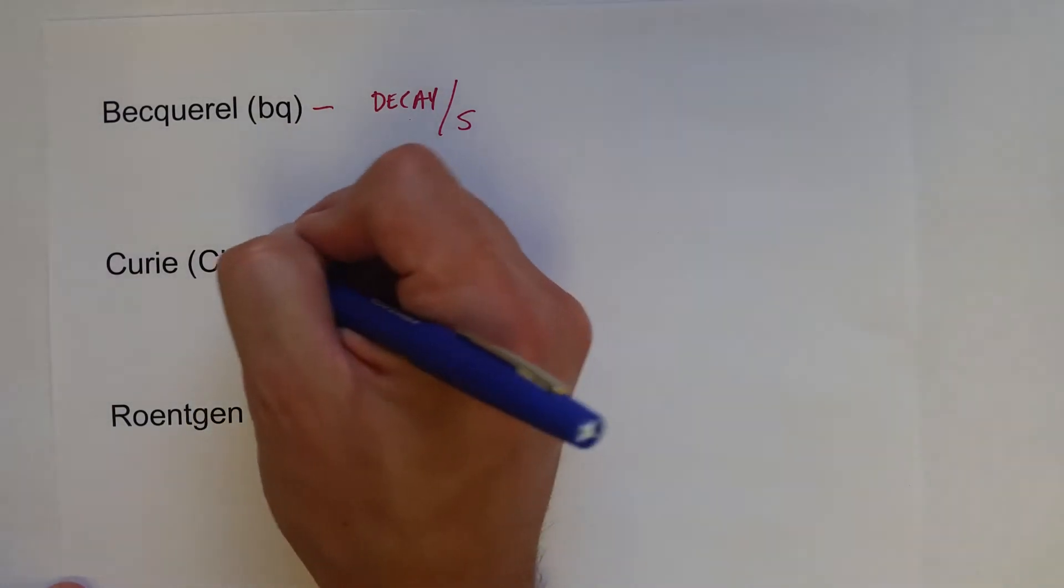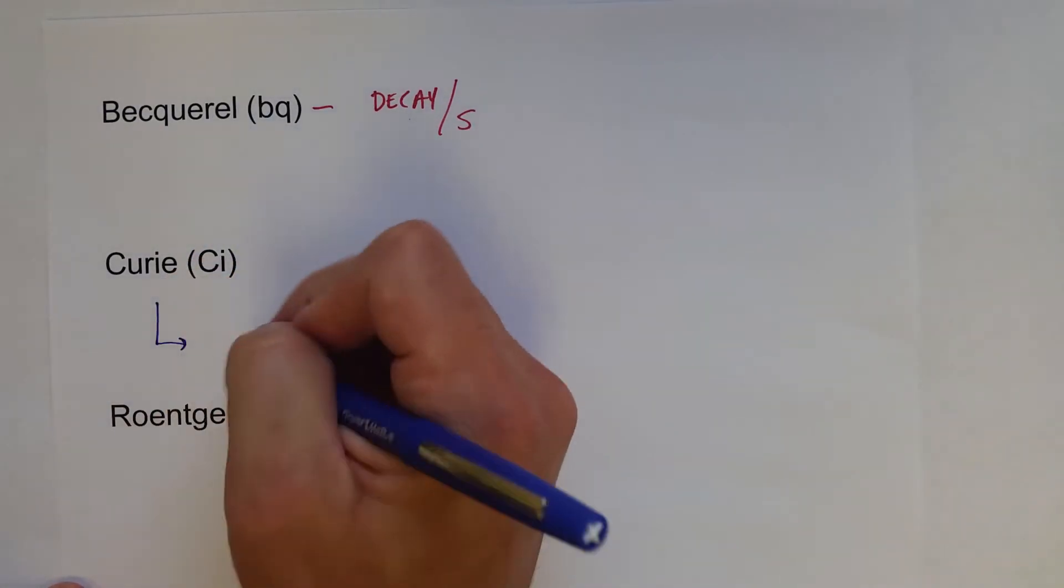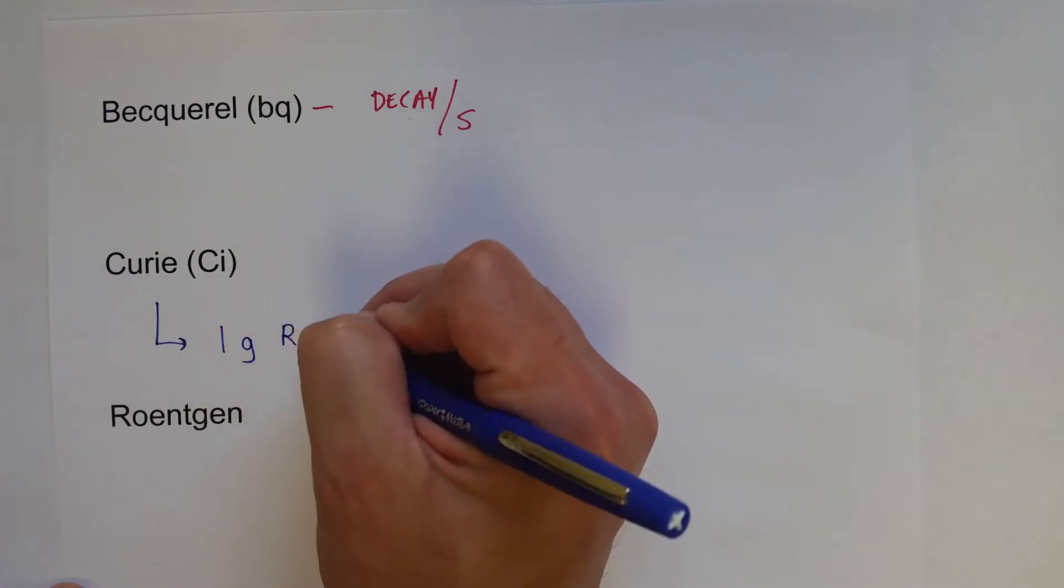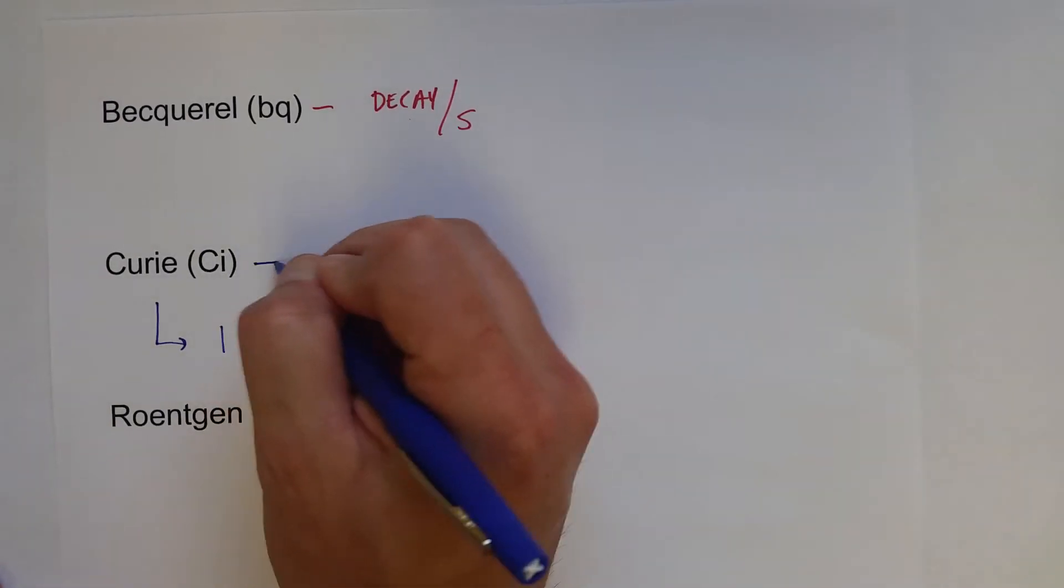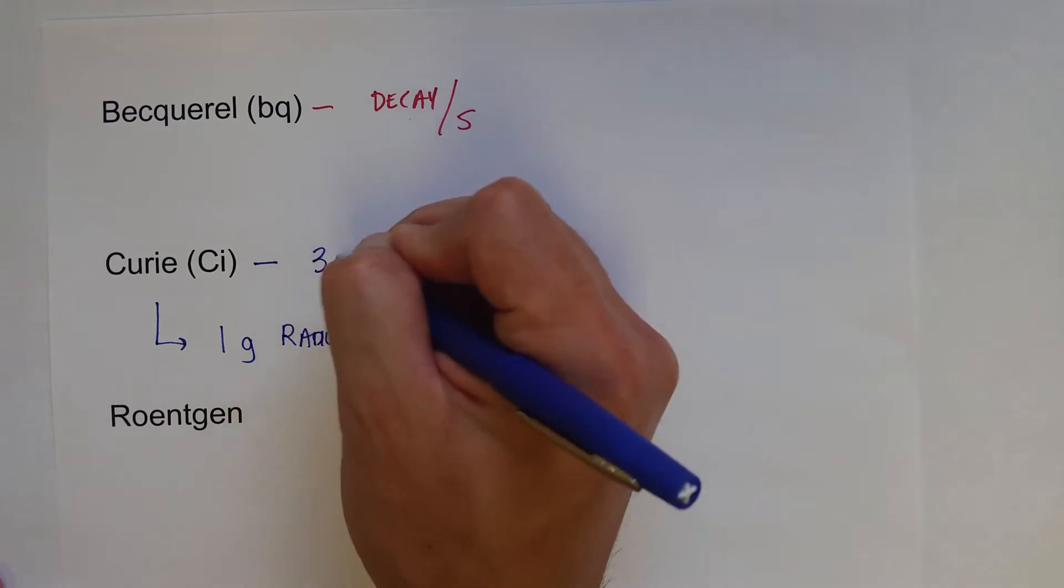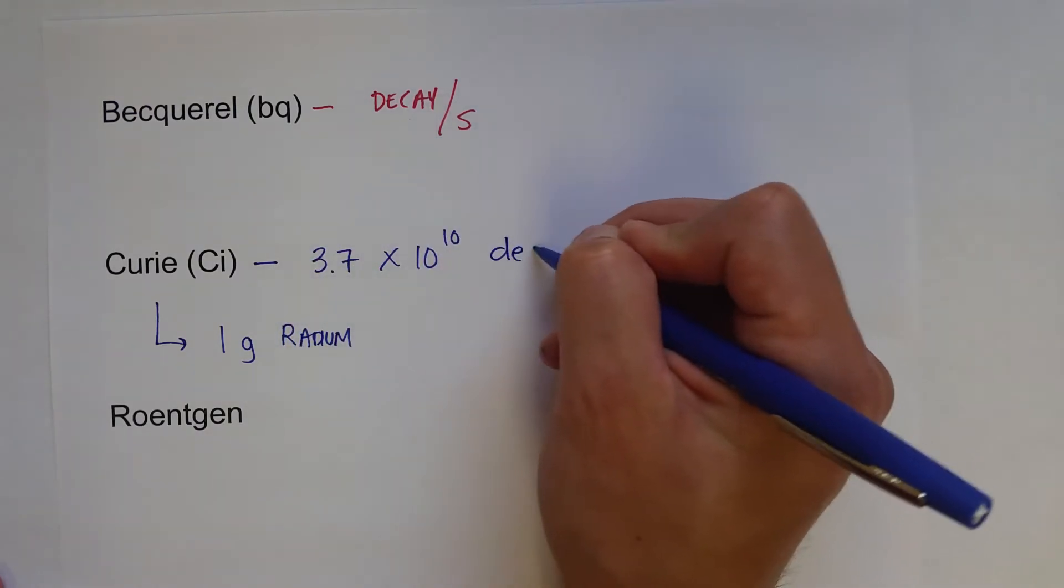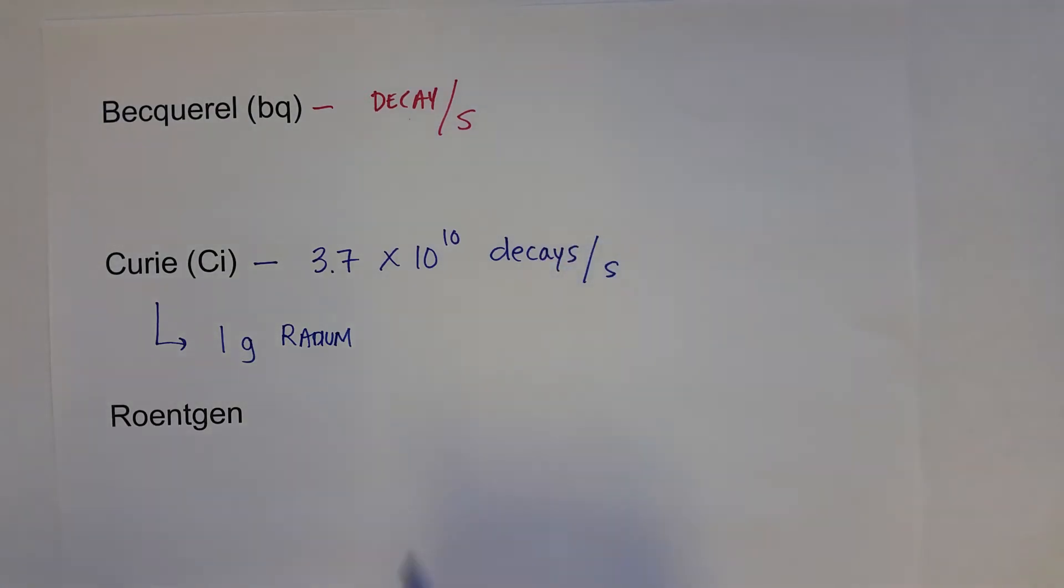The Curie, named after Marie Curie, was initially measured as the amount of radiation that came from one gram of a radioactive element radium. Since then, we know that it is equal to 3.7 times 10 to the 10th decays per second. So quite a bit of radiation per unit time.